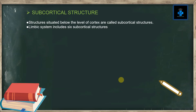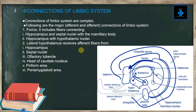Subcortical structures are situated below the level of the cortex, and the limbic system includes six subcortical structures. The connections of the limbic system are complex. Major afferent and efferent connections include: first, the fornix, which contains fibers connecting the hippocampus and septal nuclei with the mammillary body, and also the hippocampus with hypothalamic nuclei. Second, the lateral hypothalamus receives afferent fibers from the hippocampus, septal nuclei, olfactory tubercle, head of caudate nucleus, piriform area, and periamygdaloid area.